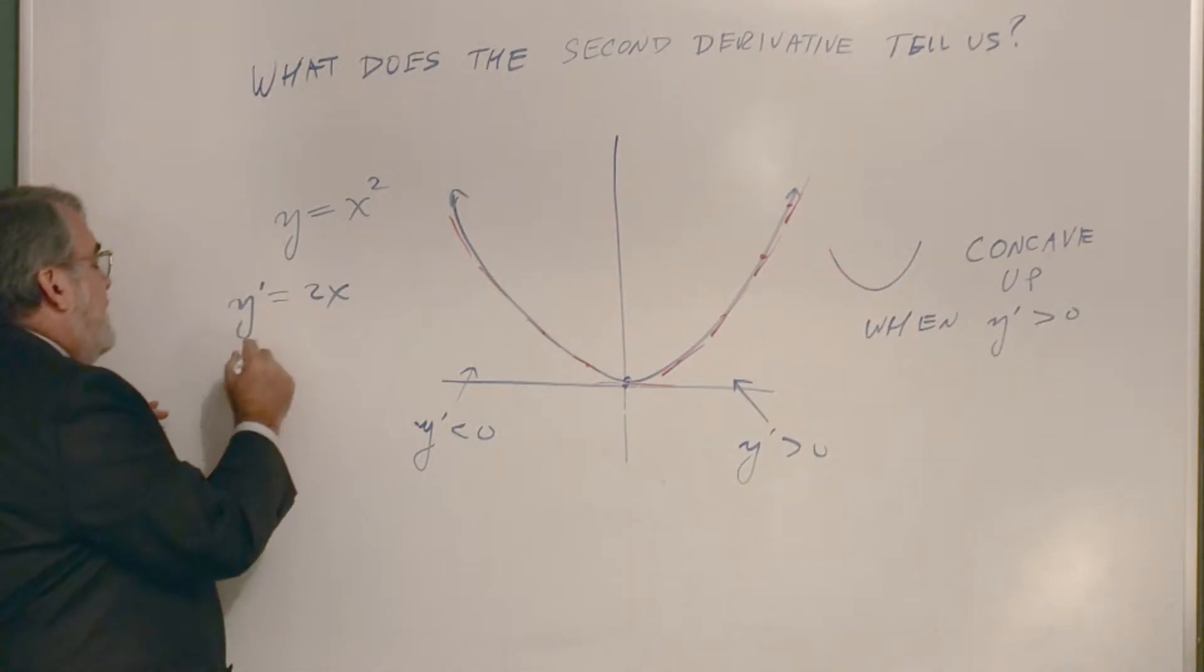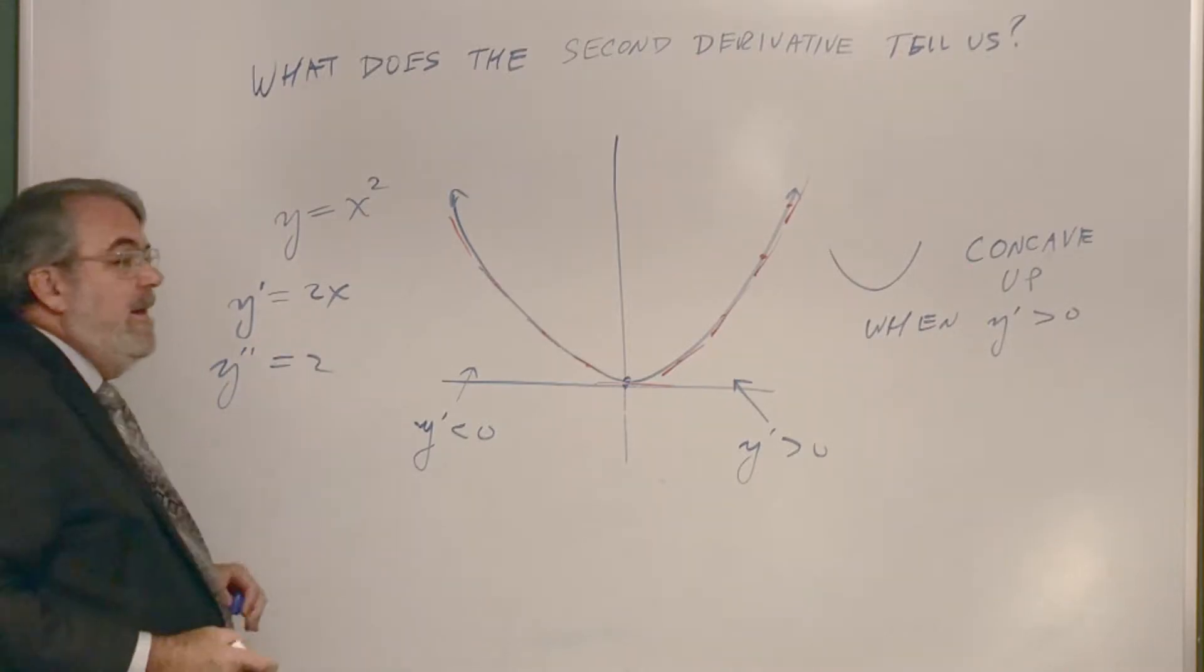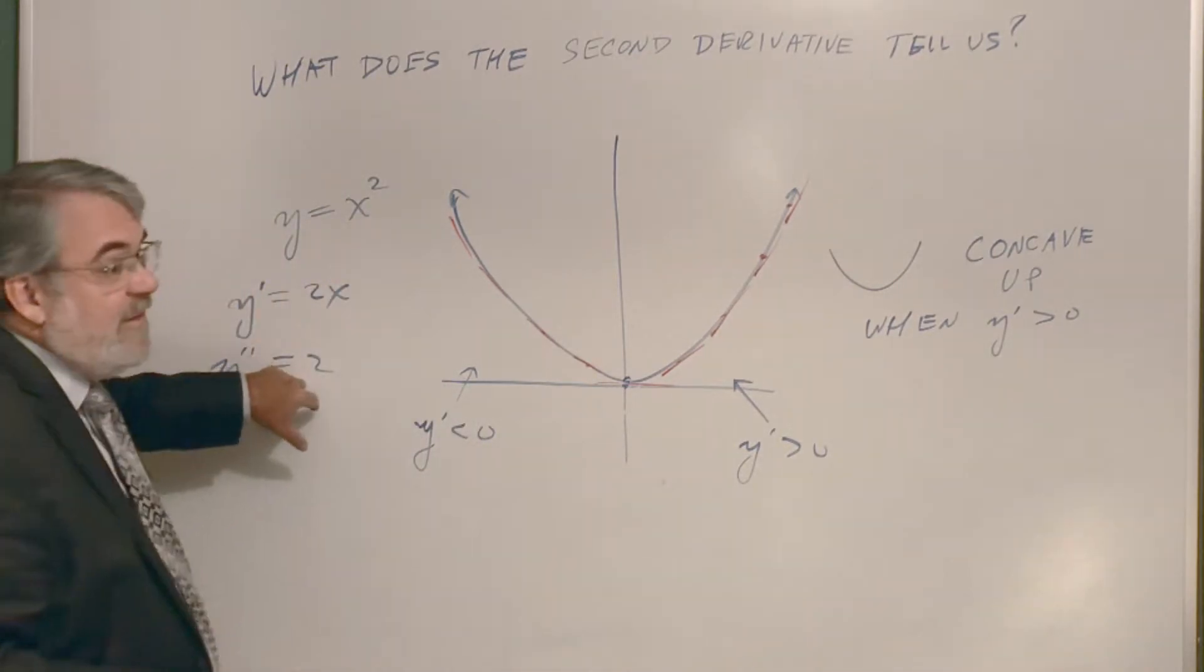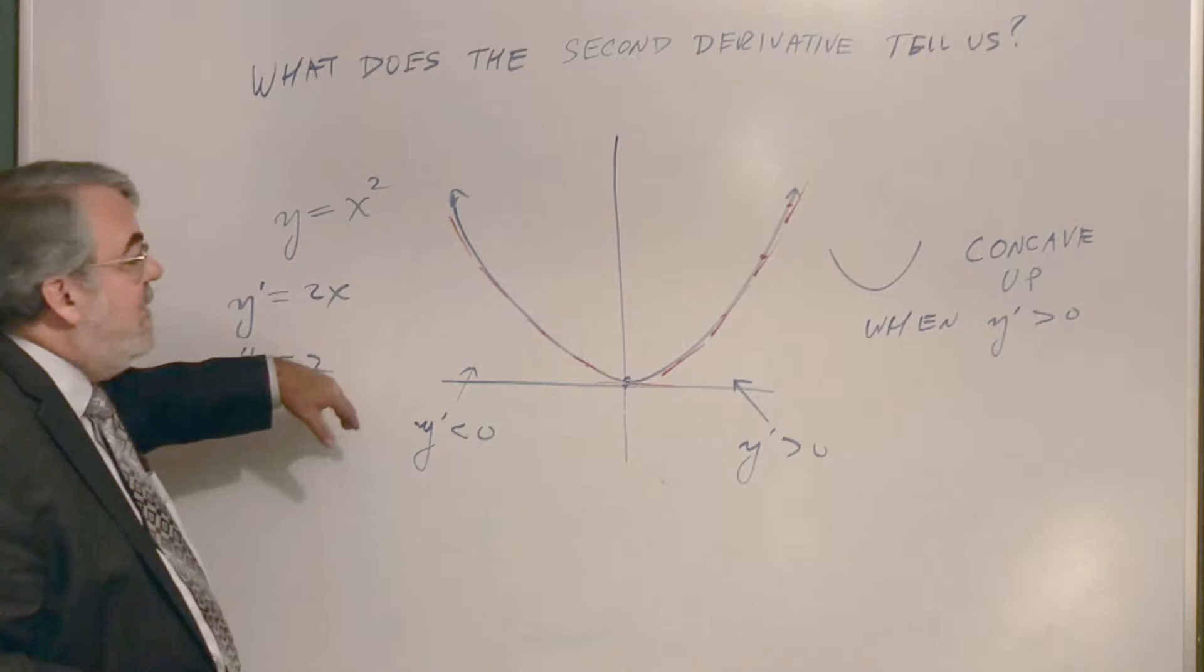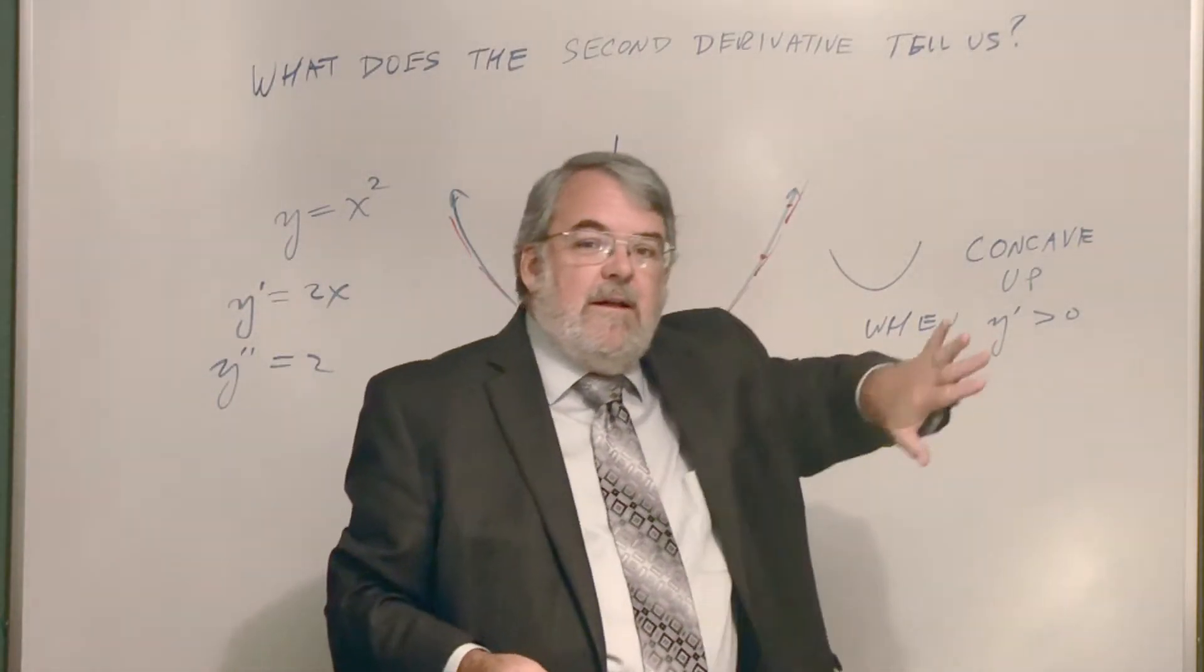And in fact, here's what happens. If I take the second derivative, derivative of 2x is 2. Well, that's constant, but it's constantly two is always positive, isn't it? So because the second derivative is a positive, always, everywhere. Then we expect the graph to be concave up.